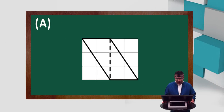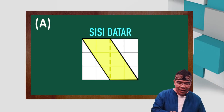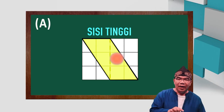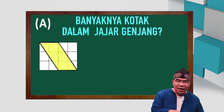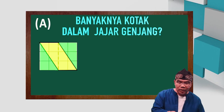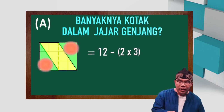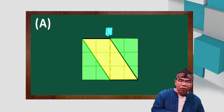Oke anak-anak, mari dengarkan penjelasan tentang mencari luas dari jajaran genjang berikut. Perhatikan, sisi datar di sini 2, tingginya 3. Luas atau banyaknya kotak yang ada dalam jajar genjang ini adalah: di sini berarti 12 dikurangi. Lihat ini sebuah segitiga yang luasnya 3, dan di sini luasnya 3. Berarti, banyaknya kotak di sini adalah 6.